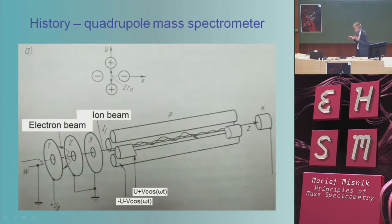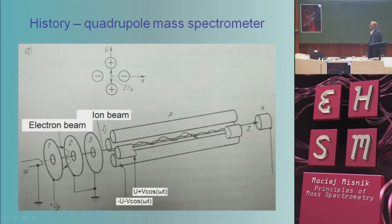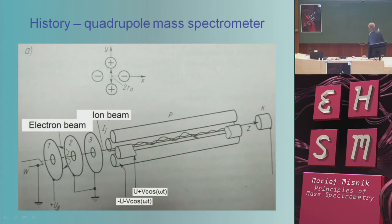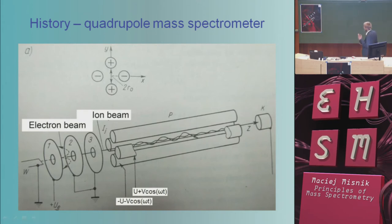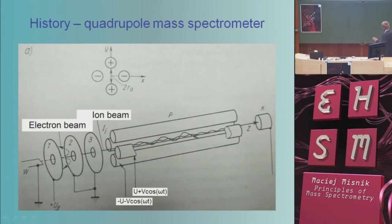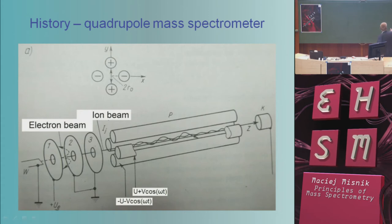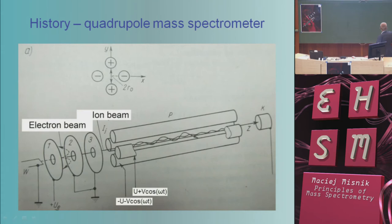Very popular today is the quadrupole mass spectrometer, constructed in 1953. It is built from four rods connected in pairs. On each pair of rods we apply a high-frequency voltage with a DC component, and ions oscillate between the rods toward the collector. Only ions with the correct mass-to-charge ratio can pass through the selector. We scan by changing this voltage, but the ratio of amplitude to DC must remain constant during the scan.